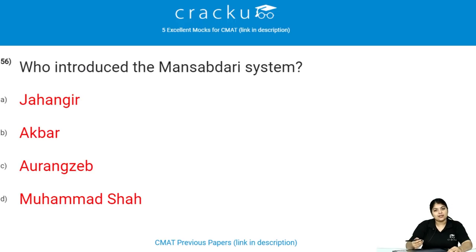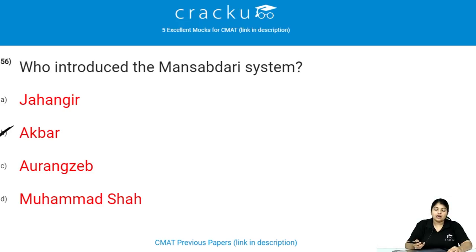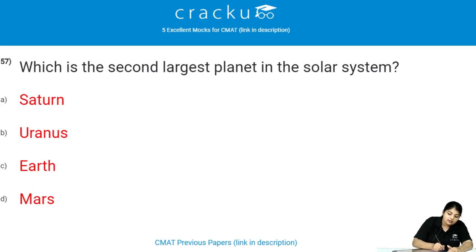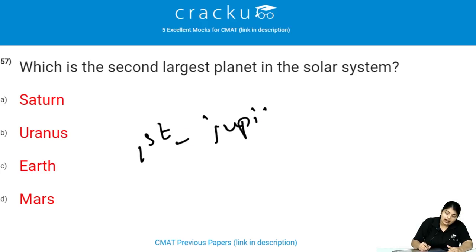Who introduced the Mansabdari system? The Mansabdari system was introduced by Akbar. Mansabdars are military commanders, high civil and military officers, and provincial governors. Which is the second largest planet in the solar system? The first largest is Jupiter and the second largest is Saturn.